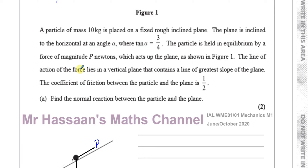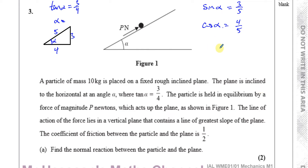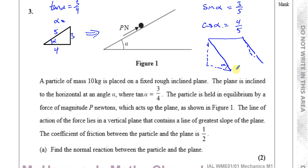It says the line of action of force lies in a vertical plane that contains a line of greater slope. A lot of students don't know what that means. Basically, if you look at the slope straight on, you see a ramp at angle alpha. What it means is the force is not acting diagonally — it's acting straight up the slope. It's the shortest distance from the bottom to the top. The force is going straight up, not at an angle.